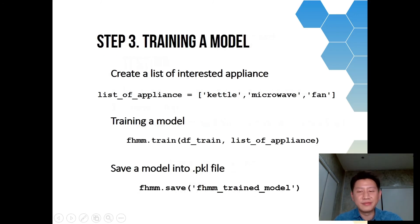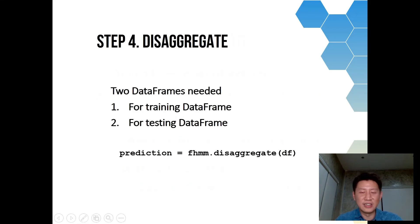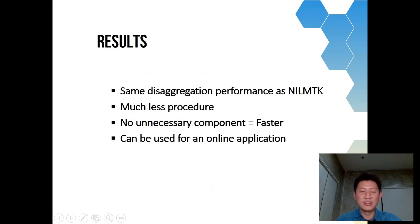After that, you train the model by providing a list of appliances to let the model know what you're looking for. You issue the command fhmm_train with your data frame and list of appliances, and you get a model that you can save for reuse. Then you disaggregate with a simple command — fhmm_disaggregate — passing your data frame to get results. Performance should be the same as NILMTK but with much less procedure, as you don't need to worry about time zones, metadata, or other things.